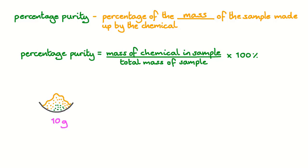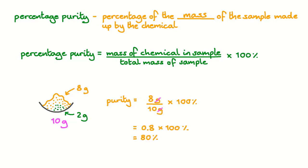Here's an example where the mass of the sample is 10 grams. We have 8 grams of our target chemical and 2 grams of our impurities. We can calculate the percentage purity by taking the mass of the chemical we're interested in, dividing by the total mass of the sample, and multiplying by 100%, giving us a purity of our target chemical of 80% in this sample. When we're dealing with purity in this way, you may see the symbol W/W, which stands for weight of chemical per weight of sample.